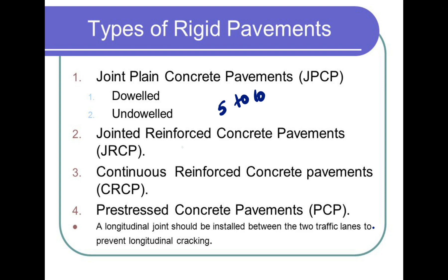The jointed reinforced concrete pavement: when we use the joint and spacing, we will add the joint spacing of 10 to 30 meters. Joint spacing is provided. There are dowel bars and there are lots of load transfers. We will increase the joint spacing. This is continuous reinforced concrete pavement (CRCP). It is not jointed — there is no main joint.